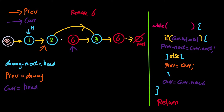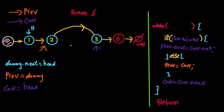So in the if block: if current.value equals the value to remove, we set previous.next = current.next. Then outside the if-else block, we advance current with current = current.next. This moves current past the removed node. Now nothing points to the removed 6, so it can be collected by the garbage collector. Notice we always advance current outside the if-else, because both branches need to advance it.